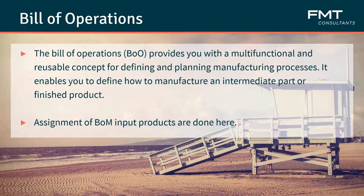The bill of operations in By Design provides a multifunctional and reusable concept for defining and planning manufacturing processes. It enables you to define how to manufacture an intermediate product part or a finished product — your sub-assemblies and your finished product. The bill of operations details specifications on how you manufacture these products. Input products defined in your bill of materials are assigned in your bill of operations. You can also assign resources to each step of the operation, including your labor resources or equipment resources — utilizing the resource management component of SAP By Design.